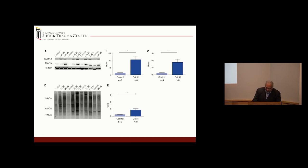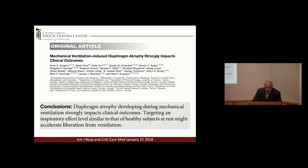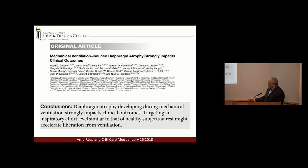More biochemical signaling promoting muscle breakdown is seen in critically ill patients, including elevated MRF and ubiquitin ligases that target proteins for degradation. A 2018 study using ultrasound found that the diaphragm thins every day from day one of mechanical ventilation, correlated with longer time on the ventilator and worse outcomes.